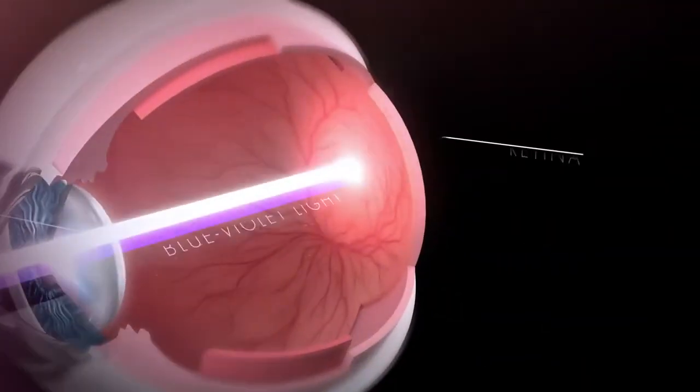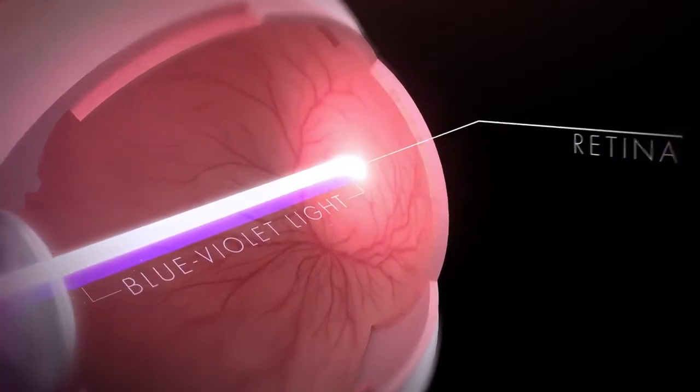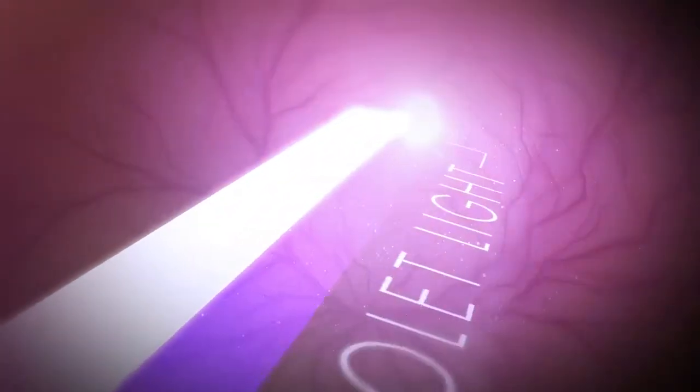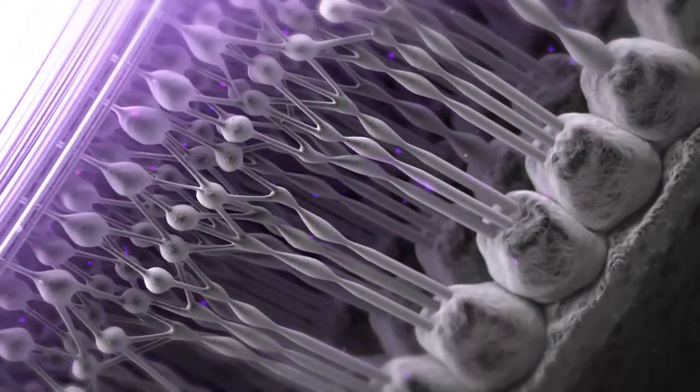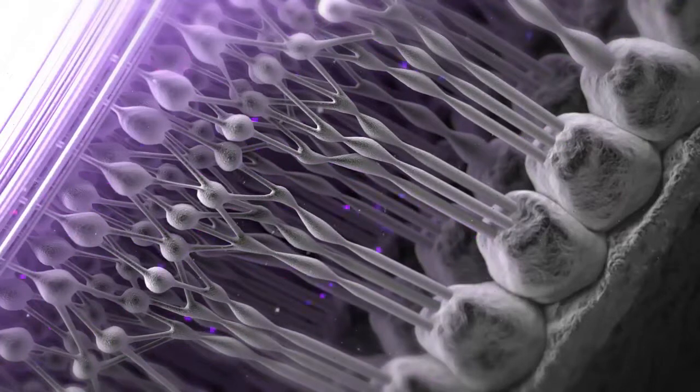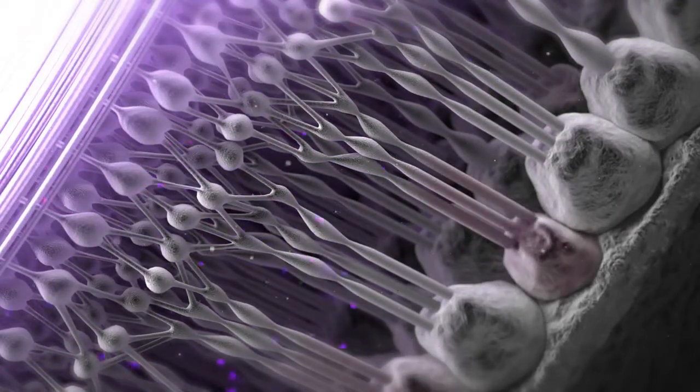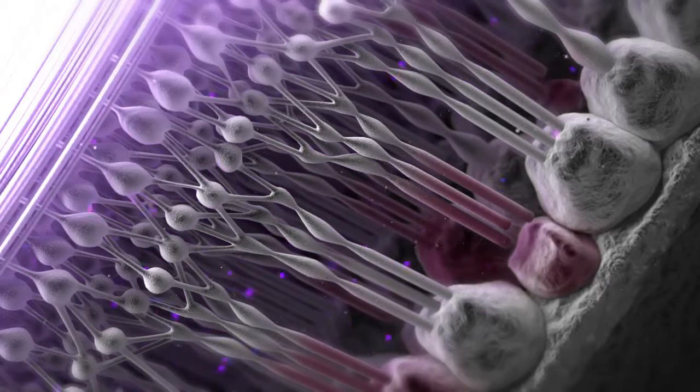Blue-violet light penetrates deeper into the eye and reaches the retina. These specific wavelengths have recently been identified as being harmful to retinal cells. Blue-violet light is involved in their gradual degeneration. It is one of the proven causes of AMD.